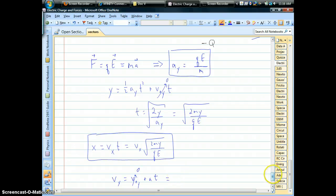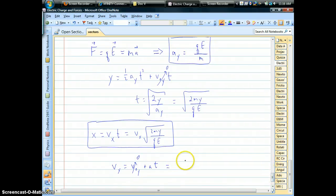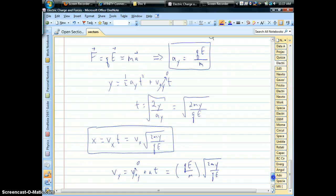So your vertical speed at the time of the collision, your acceleration is charge times the field over the mass. And then time we found was the square root. And so on.